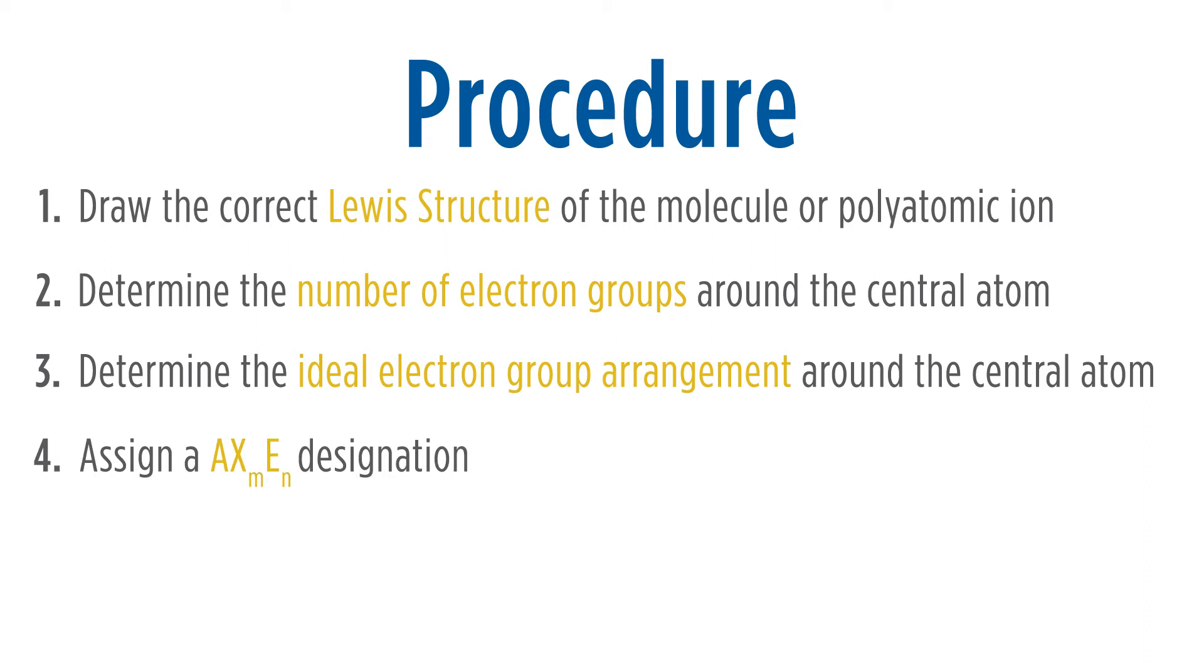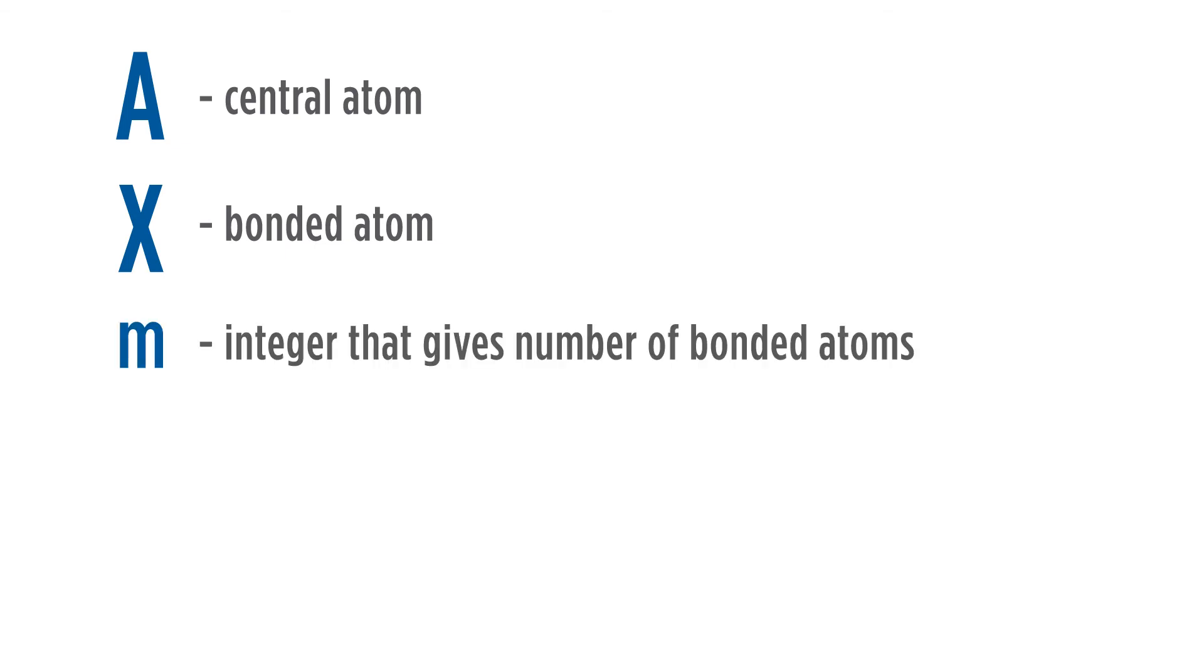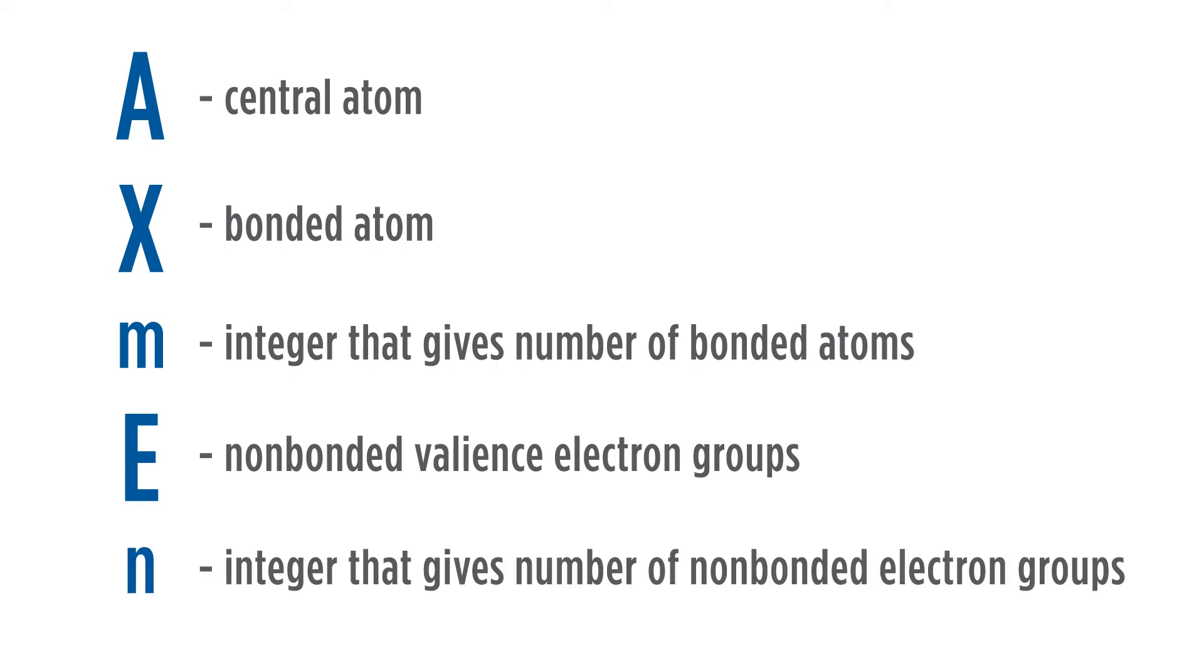Fourth, assign an AXmEn designation. This AXE, as it's often referred to, is a designation to help us classify the molecular geometries. A is the central atom. X is the bonded atoms. m is an integer that gives us the number of bonded atoms. E is the non-bonded valence electron groups. And n is an integer that gives us the number of non-bonded electron groups.